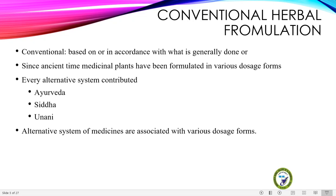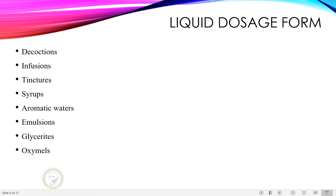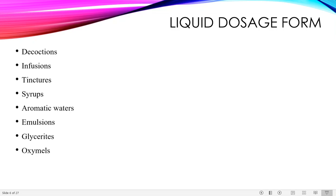Additionally, we need more information on what conventional dosage forms are. We are aware of the classification of dosage forms — they can be classified by state: solid, liquid, and semi-solid. For conventional dosage forms, we will first deal with liquid dosage forms. Examples include decoctions, infusions, tinctures, syrups, aromatic waters, emulsions, glycerides, and oxymals.